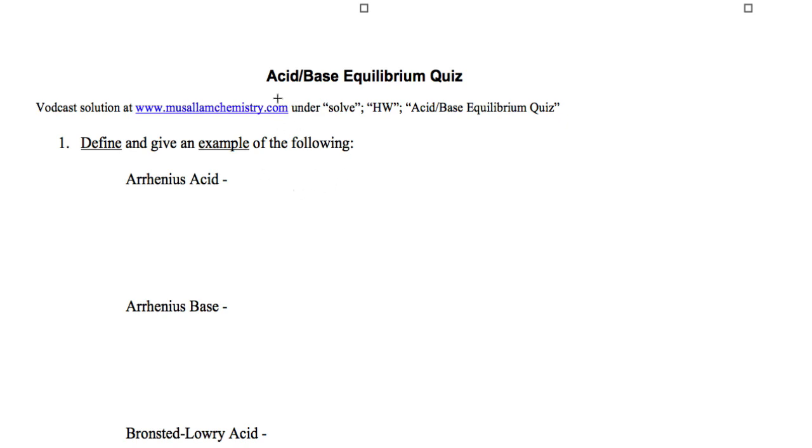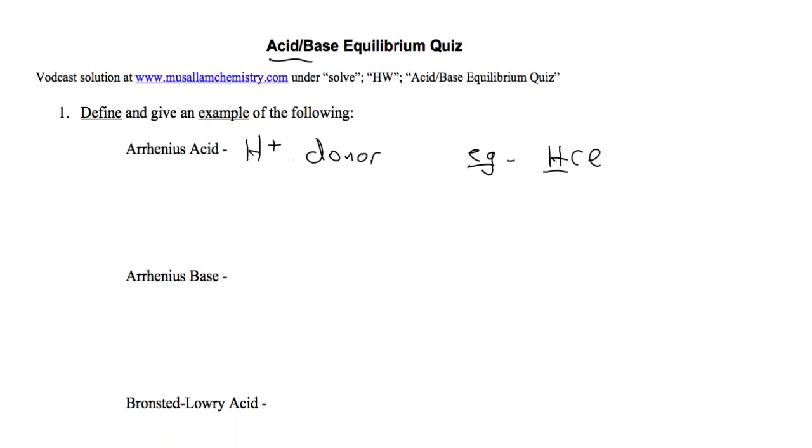Okay, vodcasting the solutions to the acid-base equilibrium quiz. An Arrhenius acid is defined as an H-plus donor. An example of that is hydrochloric acid because it starts with an H.